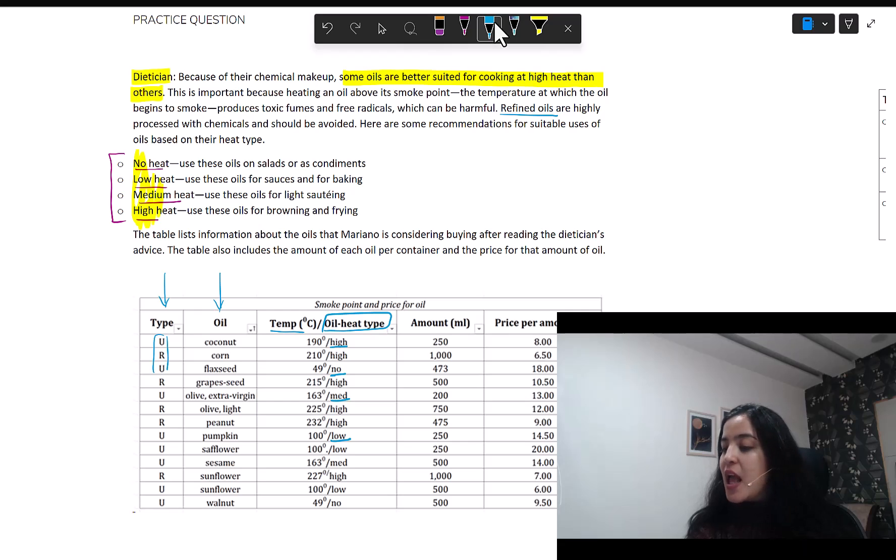Then, you have two other columns as well. One is talking about amount, and it says ml because this is the amount of each oil per container. That means when you buy one container of this oil, how many milliliters are there in it? For example, if you talk about coconut oil, then one container that you buy will have 250 ml of oil in it. While the last column is talking about the price for that amount, which means price for one container. So, the coconut oil I just talked about, that one container will be for $8. This is all that is given to us.